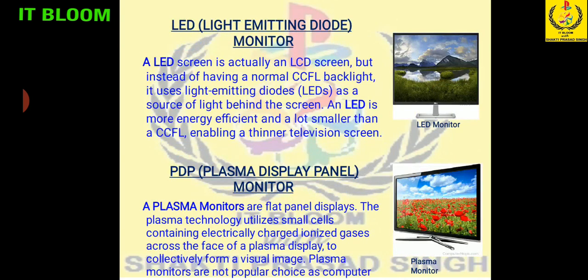Next monitor is LED — light emitting diode. Normally CCFL backlight uses light emitting diodes as a source of light behind the screen. LED is more energy efficient and a lot smaller than CCFL. Embedding a thinner screen, the light emitting diodes take less space, making it more thin compared to LCD. It will consume more energy efficiently and the picture will be clear.